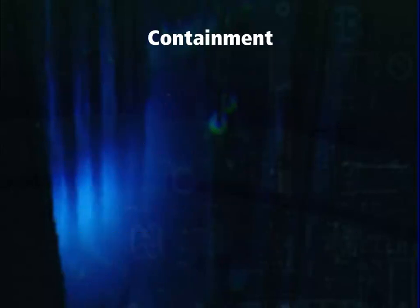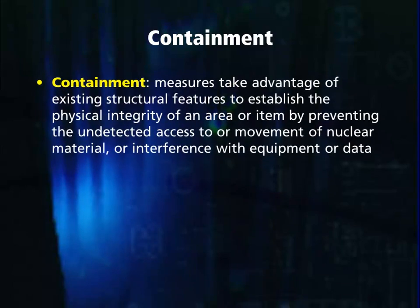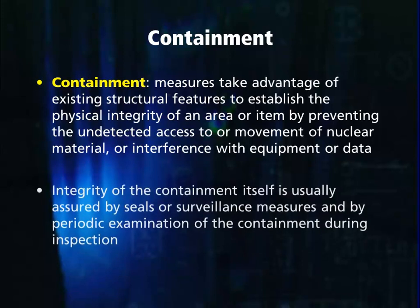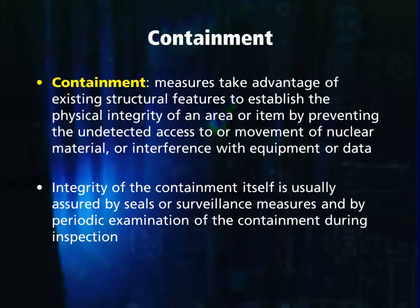What is containment? Containment refers to measures that take advantage of existing structural features to establish the physical integrity of an area or an item by preventing the undetected access to or movement of nuclear material or interference with equipment or data. This equipment or data may be IAEA instruments, devices such as radiation detectors, working papers or supplies stored in a storage cabinet. The integrity of the containment itself is usually assured by seals or surveillance measures and by periodic examination of the containment during inspector visits.